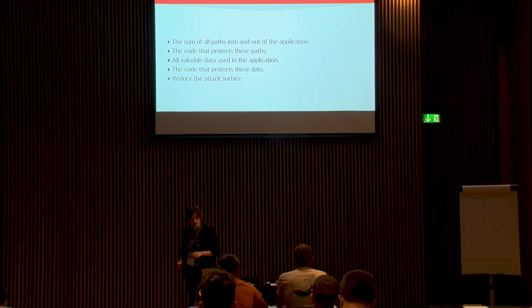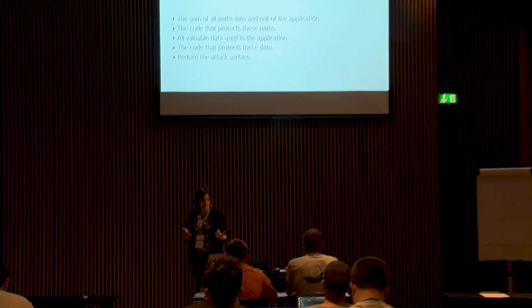You have code that protects these paths — it can be actual code, other devices, a firewall, or even a physical security system. Then you have the valuable data used in the application. You have to know what has value and what doesn't. Email addresses of your users are potentially valuable. Credit card numbers may be a lot more so. Other data is pretty much pointless — like links between different users. Nobody really cares about that, or maybe the content is publicly visible anyway, so it doesn't have much value if stolen.